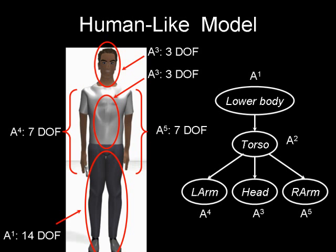Our approach can handle a model with many degrees of freedom. For example, the articulated model in our experiment has 38 degrees of freedom. The degrees of freedom are partitioned into a hierarchical representation. Our articulated model uses five such partitions.